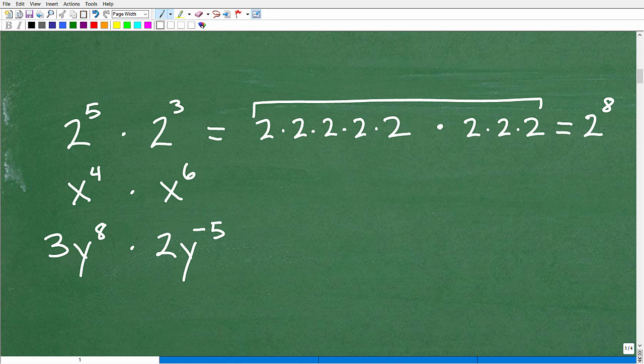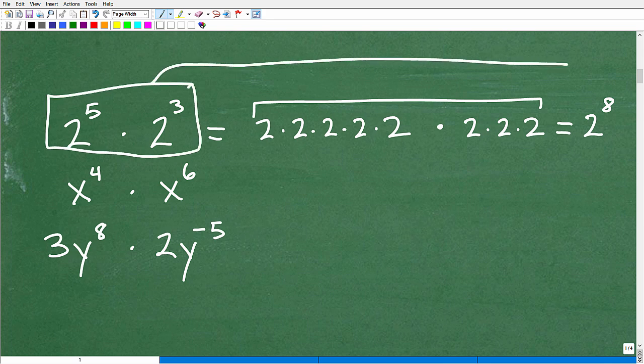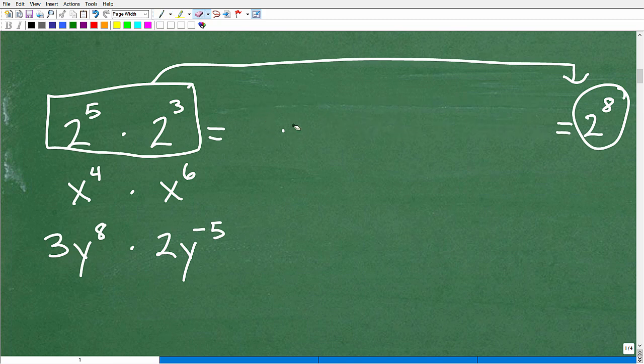So looking at that, studying this, what would be a rule? What happened here? How did we get from here to here? That's the answer. Got from here to here. What occurred? Aha, so I see that you are on your A game today. You're like, yeah, look, you added these things up here. Yes, that is what we did. We added the exponents. So we are going to have here 2 to the 5 plus 3 equals 2 to the 8th power. That's exactly what occurred. We did add the exponents.